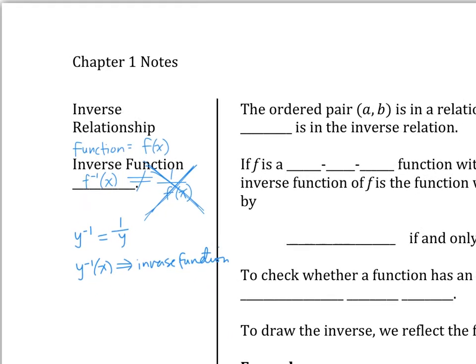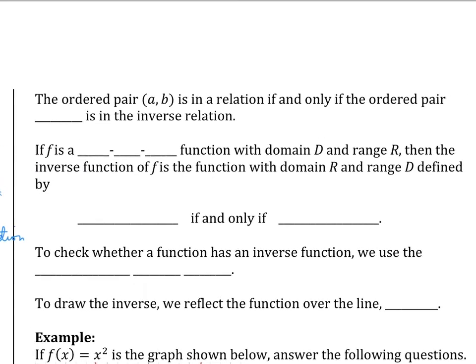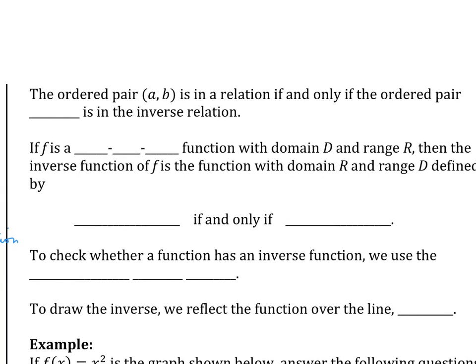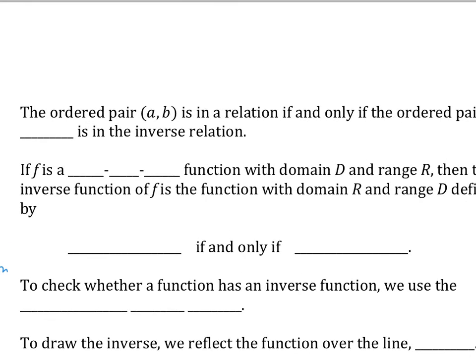What's special about the inverse function? In the original function, if you have a and b, the inverse function would be b, a. Basically, you switch x and y. So in the original function if you have a and b, then in the inverse relation or inverse function, you're going to have b, a. Another thing: if in a function you have a domain and range, in the inverse function it's going to reverse - so range becomes domain.